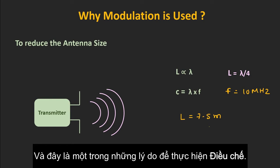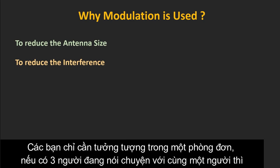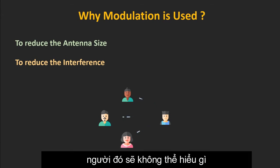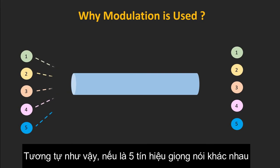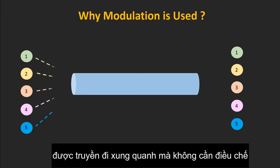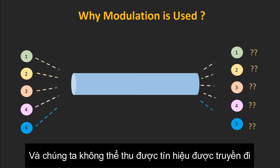So that is one of the reasons for modulation. The second reason is to reduce interference. Imagine in a single room, if three persons are talking to the same person, that person won't get anything clearly. Similarly, if five different voice signals in the same frequency range are transmitted without modulation through a single channel, there will be interference between them and at the receiver we won't get the transmitted signal.